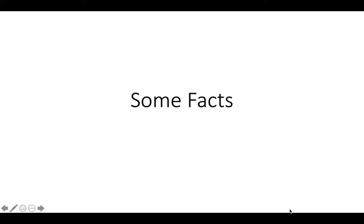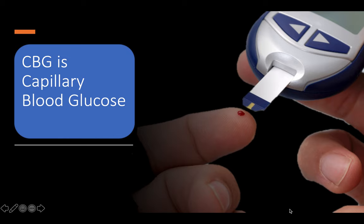Some basic facts about diabetes. CBG stands for capillary blood glucose — we take blood from the tip of the finger or earlobe, hence it is called capillary blood glucose. The blood glucose in the muscles will be different from the capillaries.